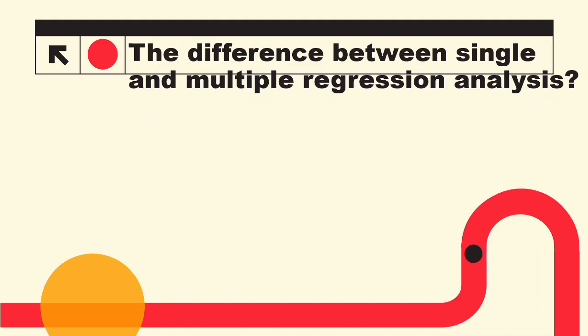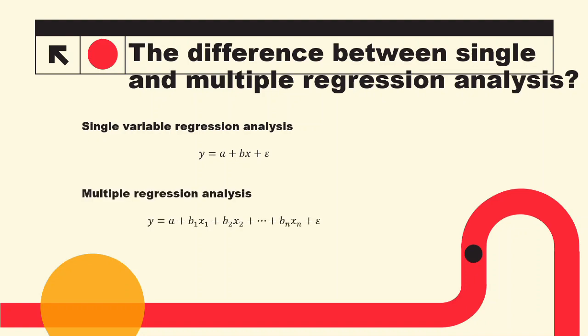What is the difference between single variable regression analysis and multiple regression analysis? Single variable regression analysis only has one independent or explanatory variable — in the equation you will see only one x with one b representing the coefficient for that x. Multiple regression analysis, on the other hand, has more than one independent variable. You can see that we have multiple x's representing our independent variables and multiple b's representing their coefficients.